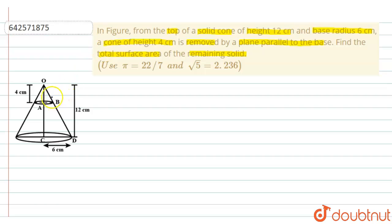So, in this diagram, we have a cone where the base is CD and it is given as 6 cm. From this, a cone OAB which is parallel to CD is removed, and the height of removed cone is 4 cm.